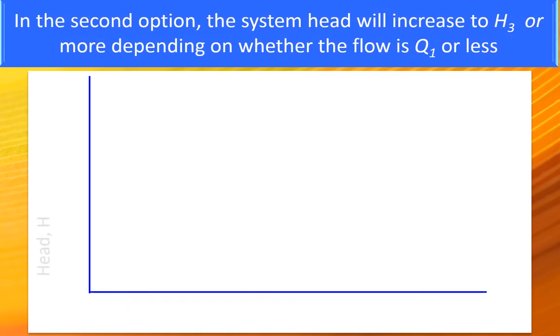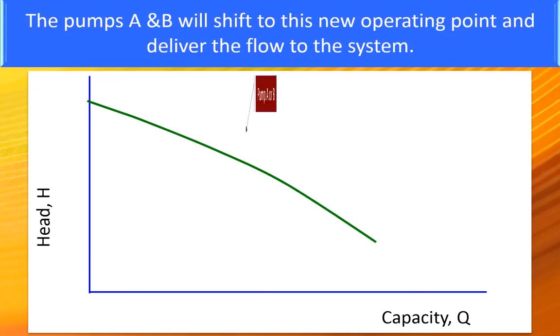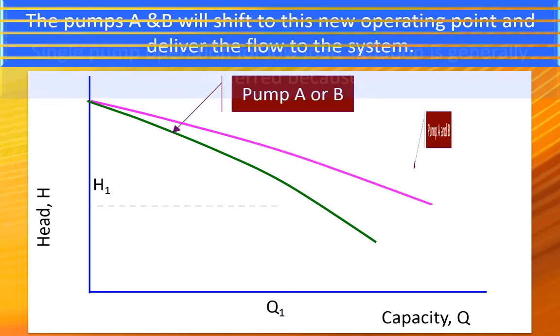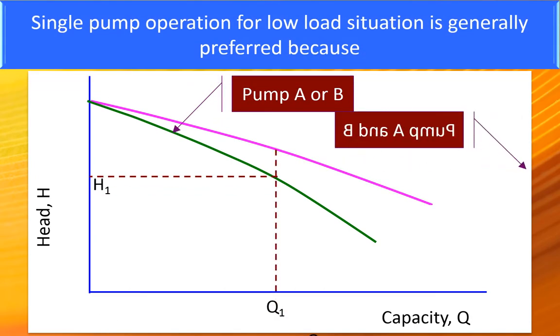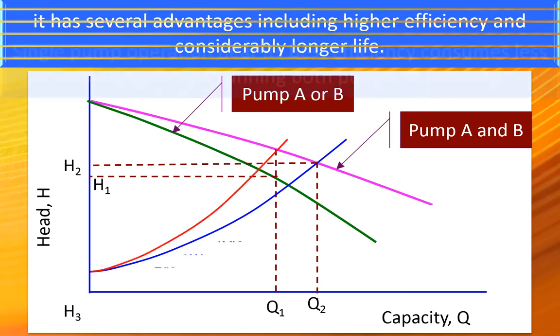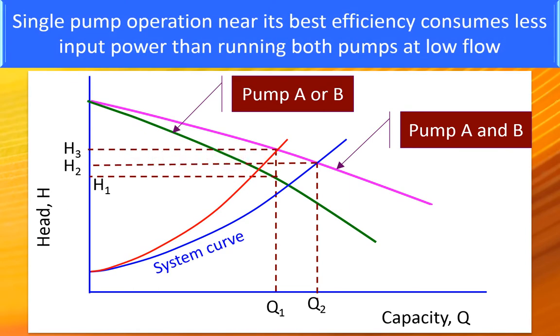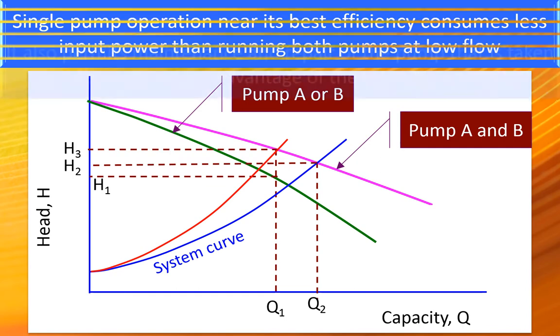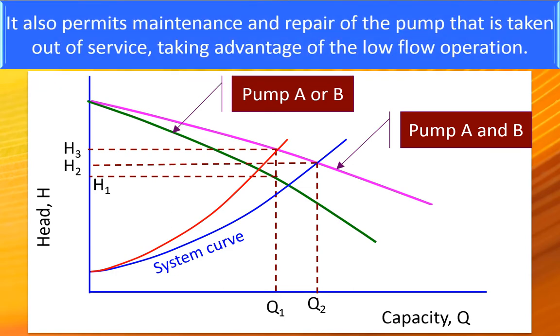In the second option, the system head will increase to H3 or more depending on whether the flow is Q1 or less. The pumps A and B will shift to this new operating point and deliver the flow to the system. Single pump operation for low load situation is generally preferred because it has several advantages including higher efficiency and considerable longer life. Single pump operation near its best efficiency consumes less input power than running both pumps at low flow. It also permits maintenance and repair of the pump that is taken out of service, taking advantage of the low flow operation.